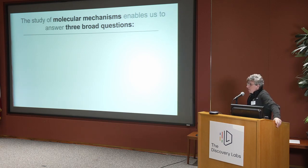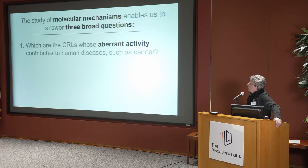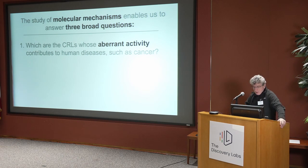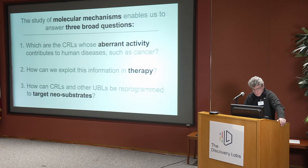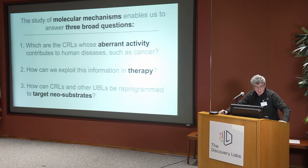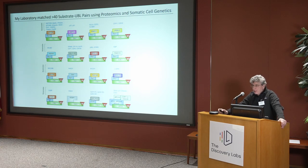In our lab we are interested in molecular mechanisms, and their study allows us to answer three major questions: first, what are the CRLs whose aberrant activity contributes to human diseases such as cancer? Second, how can we exploit this information in therapy? And third, how can CRLs and other ubiquitin ligases be reprogrammed to target new substrates? Along the years, my laboratory has matched about 40 substrate-ubiquitin ligase pairs. We start in general from proteomics and somatic cell genetic studies to identify the initial hits, and then validate them in cell systems as well as in animal models.